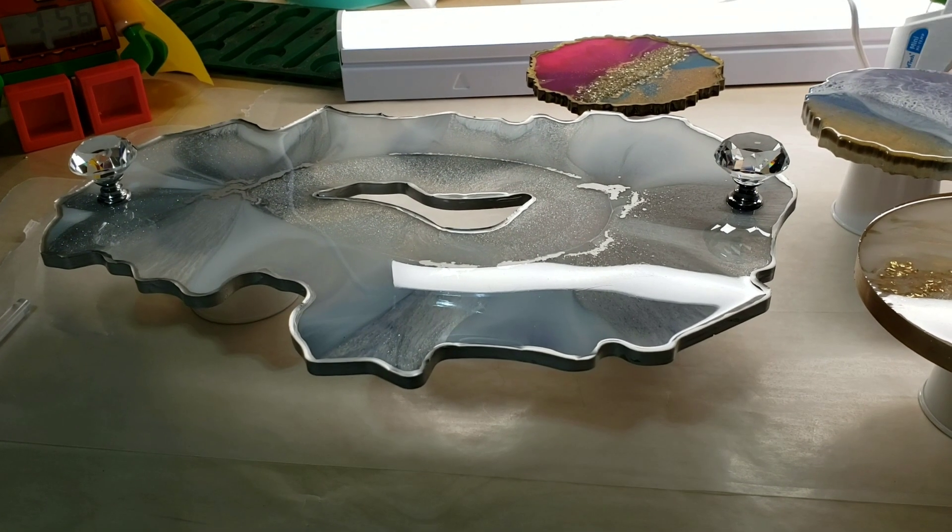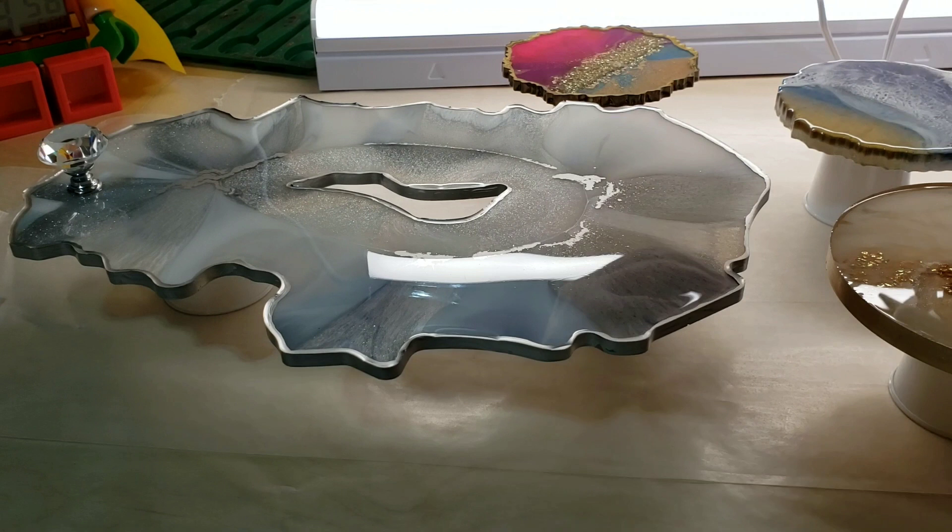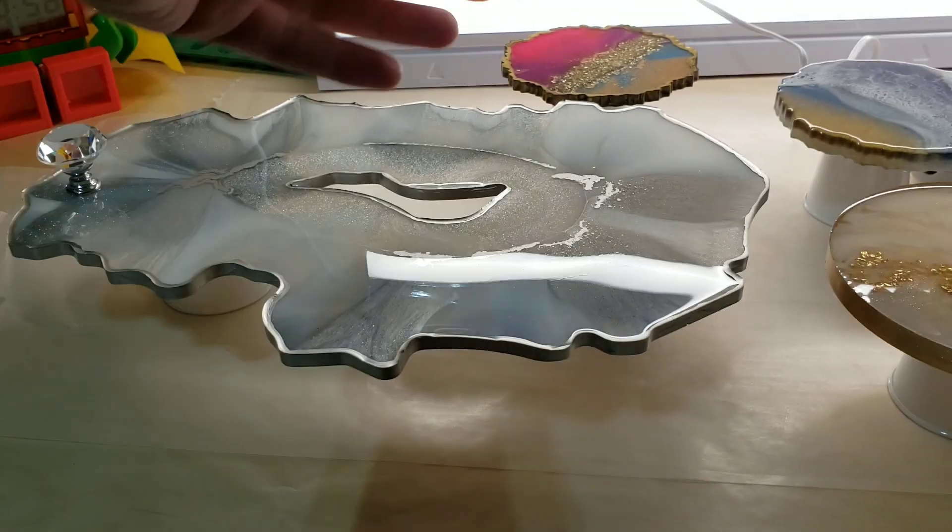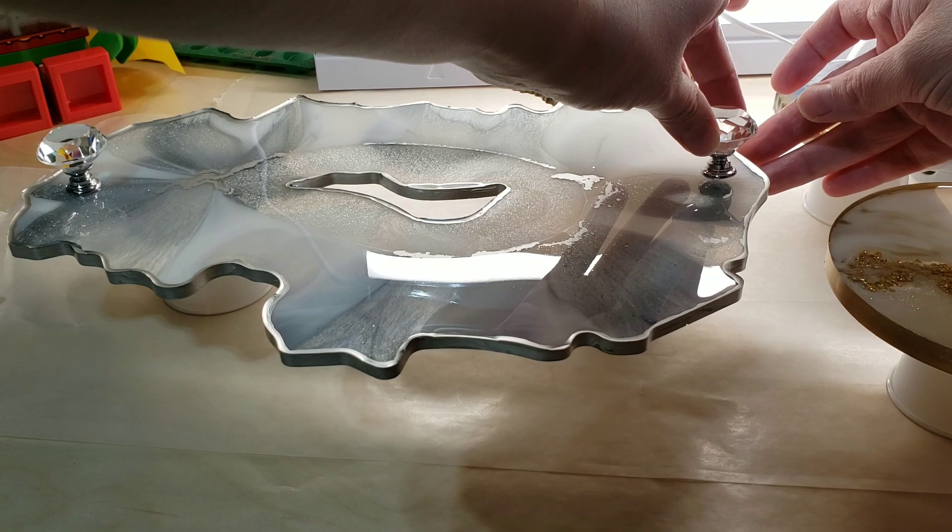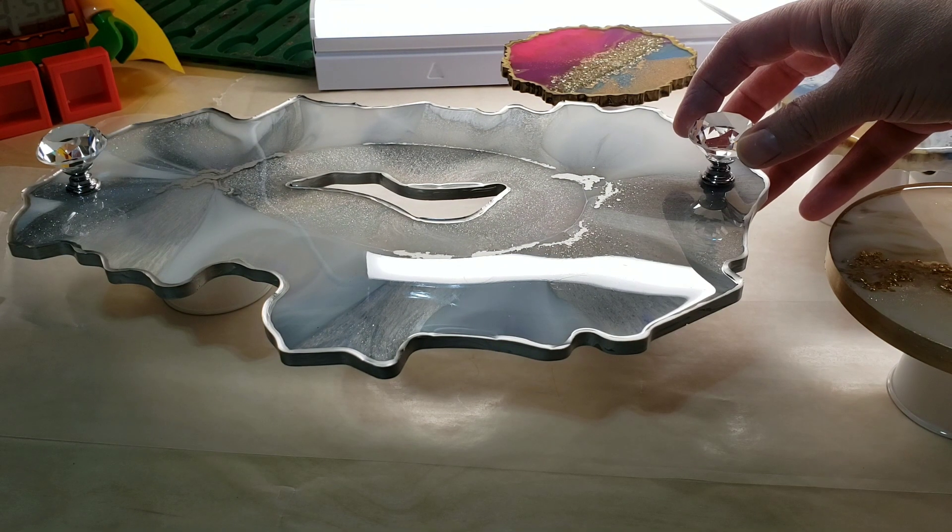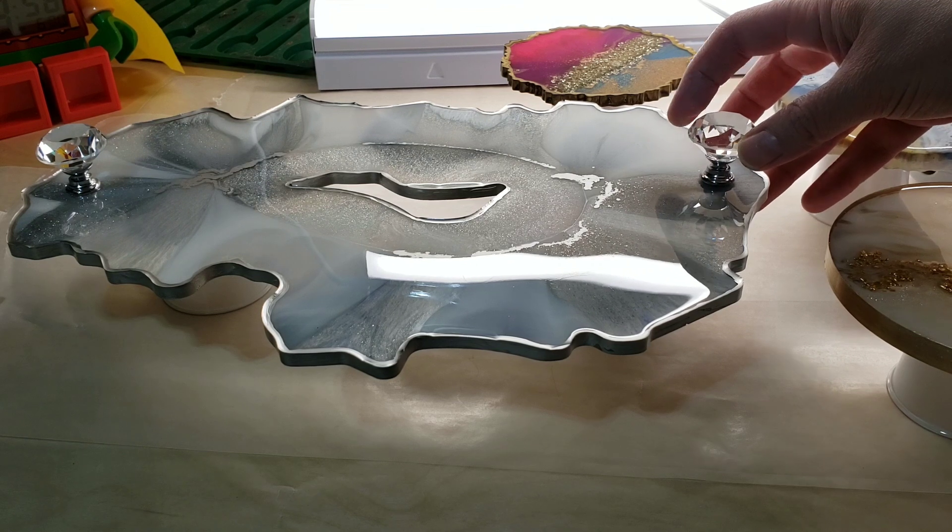So to attach my knobs, I'm going to take some hot glue just a little bit. You don't need to add a ton. You don't want it gushing out of the bottom of the knob here and just place it where you want and that's going to help ensure that it's not going to fall over after you add your clear resin.